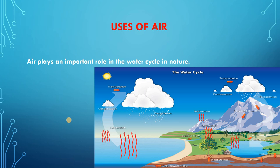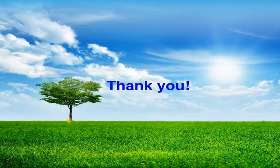Evaporation, transpiration, condensation, and precipitation — all these processes are involved in the water cycle. Moving air also carries rain clouds from one place to another and helps in bringing rain at all places. So these are all the uses of air. That's all for today. Thank you, everyone.